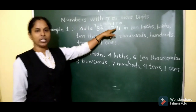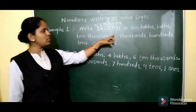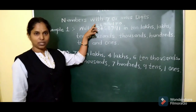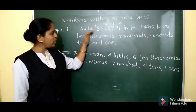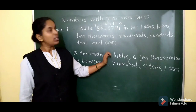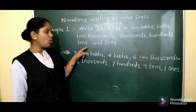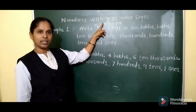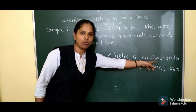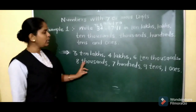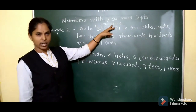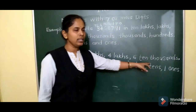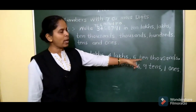So how to write the given 7-digit number in 10 lakhs, lakhs, 10,000, 1000, 100's, 10's, and 1's? We have to look at which digit is at which place and write the answer accordingly. 3 is at the 10 lakhs place — 3 ten-lakhs. 4 is at the lakhs place — 4 lakhs. 6 is at the 10,000 place — 6 ten-thousands. 8 is at the 1000's place — 8,000. 7 is at the 100's place — 7 hundreds. 9 is at the 10's place — 9 tens. And 1 is at the 1's place — 1 one.